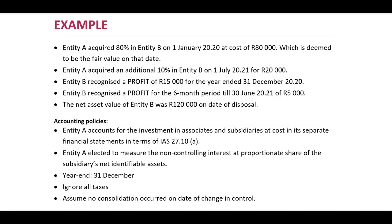In this example we have a subsidiary that remains a subsidiary by purchasing an additional 10 percent in Entity B. Entity A acquired 80 percent in Entity B on 1 January 2020 at a cost of 80,000, deemed to be fair value on that date. Entity A then acquired an additional 10 percent in Entity B on 1 July 2021 for 20,000. Therefore 80 percent plus 10 percent equals 90 percent — it remains a subsidiary. Entity B recognized a profit of 15,000 for the year ended 31 December 2020.